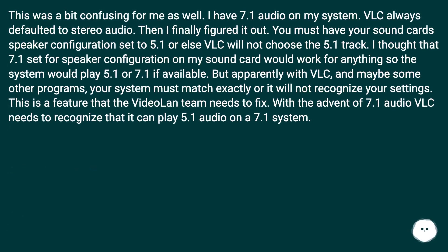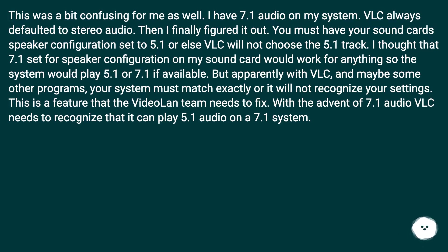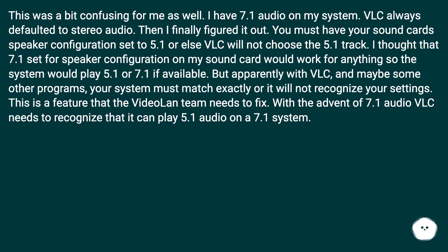This was a bit confusing for me as well. I have 7.1 audio on my system and VLC always defaulted to stereo audio. You must have your sound card's speaker configuration set to 5.1, or else VLC will not choose the 5.1 track. I thought that 7.1 set for speaker configuration would work for anything, but apparently with VLC, and maybe some other programs, your system must match exactly or it will not recognize your settings. This is a feature that the VLC team needs to fix — VLC needs to recognize that it can play 5.1 audio on a 7.1 system.